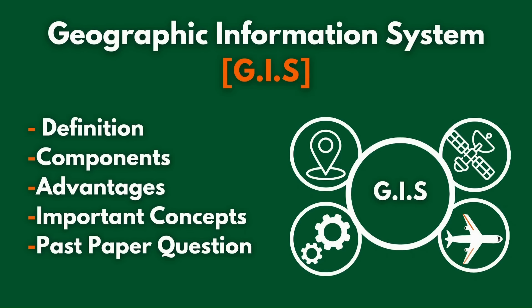Today we're going to be taking a look at the Geographic Information System, commonly known as GIS. We are going to go through some of the main aspects that you will find in your exam paper: the accepted definition of GIS, the four main components of GIS, the advantages of GIS over traditional paper maps, and important concepts such as remote sensing and data integration. We will end with a past paper question.